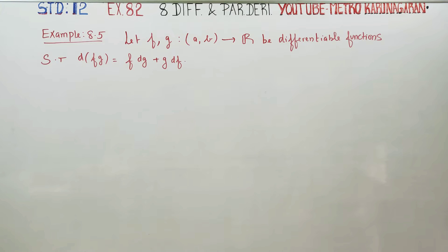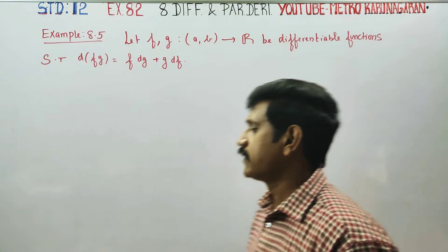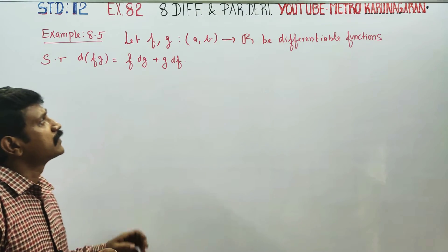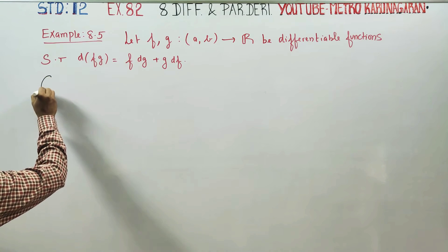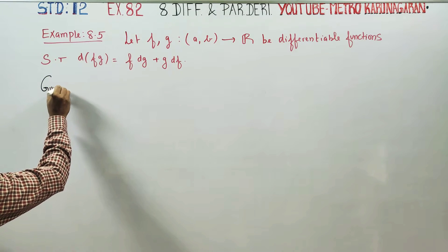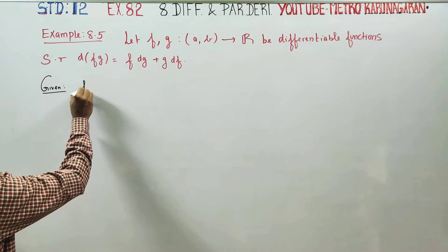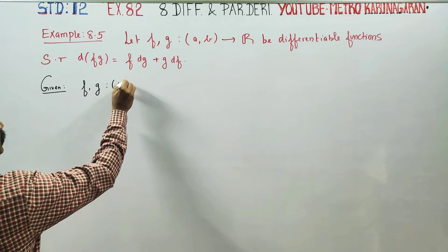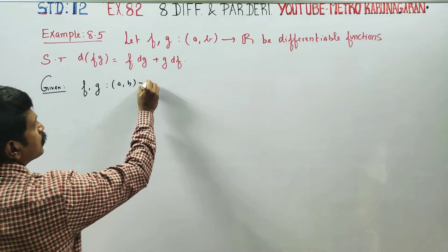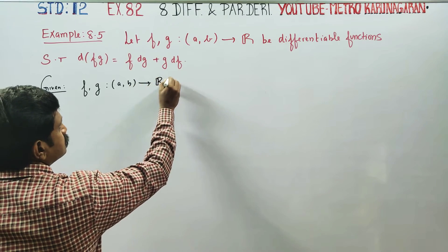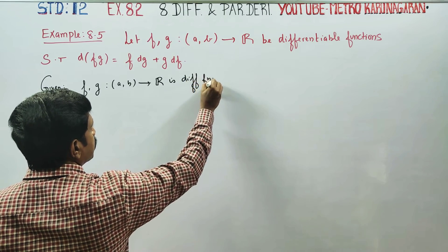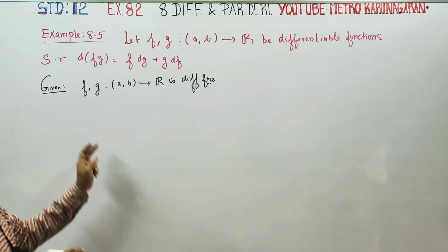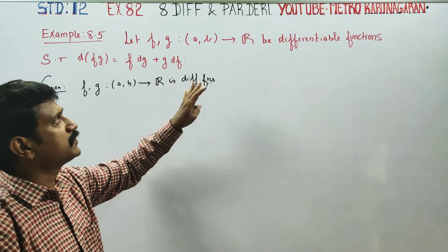Dear students, I am Metro Karanagaran. In example 8.5, let f and g be differentiable functions. It is given that f and g are differentiable functions on the interval a to b.